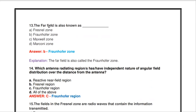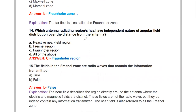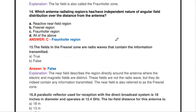Next question: the far field is also known as — Fresnel zone, Fraunhofer zone, Maxwell zone, or Marconi zone? The far field is otherwise called the Fraunhofer zone. The near field is called the Fresnel zone.